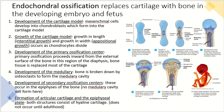The next step is the development of the secondary ossification center. These occur in the epiphyses of the bone, and they don't have any medullary cavity forming there. And then last is the formation of the articular cartilage and the epiphyseal plate, both consisting of hyaline cartilage, and these don't occur until adulthood.